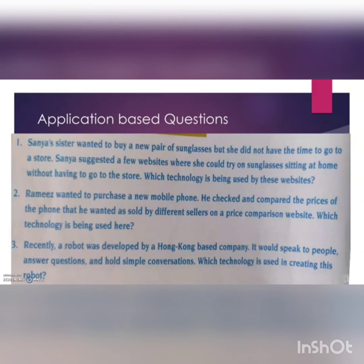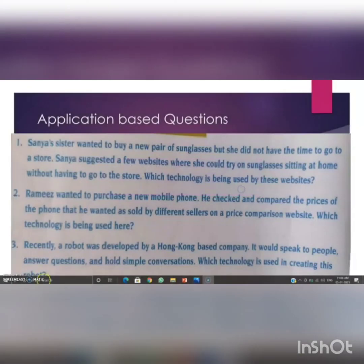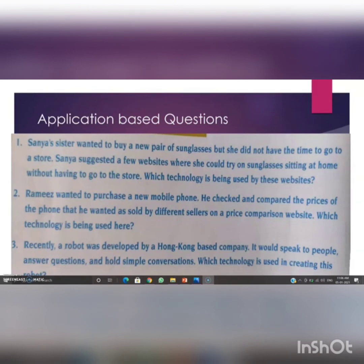Question two: Rami wanted to purchase a new mobile phone and checked and compared prices across sellers on a price comparison website. Which technology is used? Big data analytics. Question three: A robot developed by a Hong Kong-based company can speak to people, answer questions, and hold simple conversations. Which technology is used to create this robot? Artificial intelligence.